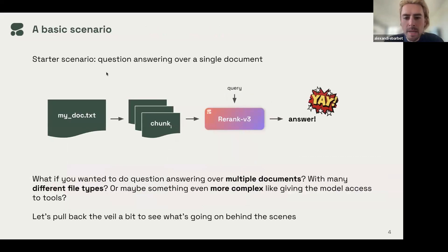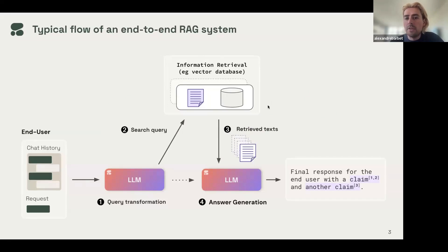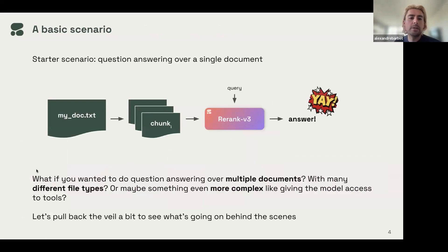Let's talk about a very basic scenario. The simplest way you could do RAG: let's say you had a single document and you want to do question answering over that single document. You might take that document text, chunk it up naively into the token sizes that would fit into some model like Cohere Rerank V3. You then pass your query into the Rerank model along with all of your chunks and you get a nice answer. That works for a simple case like a single document, but we can start asking more questions. What if you want to do question answering over multiple documents with lots of different file types or maybe something even more complex like tool calculators, Python interpreter? There's more you can do outside of just single document question answering. So why don't we pull back the veil a bit and take a look at what we can do with RAG.